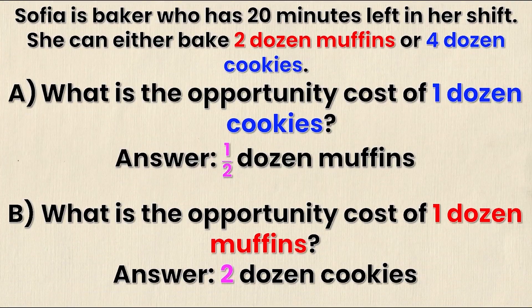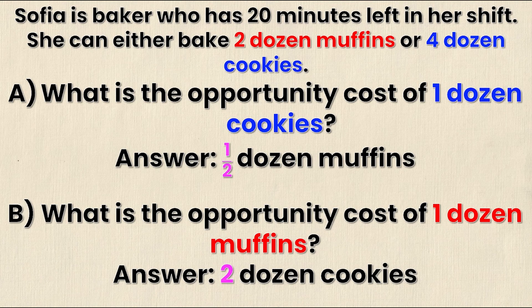You might wonder how to remember what units the opportunity cost is expressed in. The opportunity cost of cookies is in terms of muffins, and the opportunity cost of muffins is in terms of cookies — and this will always be the case. Opportunity cost is a cost, and like any cost it's expressed in terms of what you give up. Just like buying a pizza slice costs dollars because you give up dollars, the cost of cookies is muffins because that's what you give up to make more cookies.